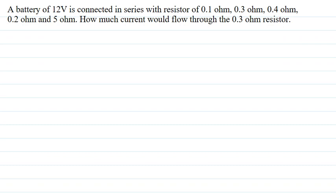Hello everyone, hope you are doing well. I am going to explain this question in this video. The question says a battery of 12 volt is connected in series with resistor of 0.1 ohm, 0.3 ohm, 0.4 ohm, 0.2 ohm and 5 ohm.